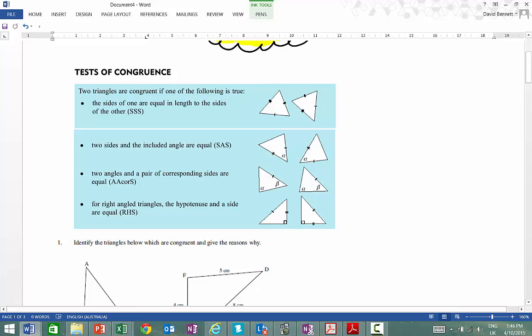And then if we have two angles and a corresponding side, then that's another proof. And the last one is the RHS, so if you have the right angle, a side that's common and also the hypotenuse, then those two triangles have to be exactly the same.